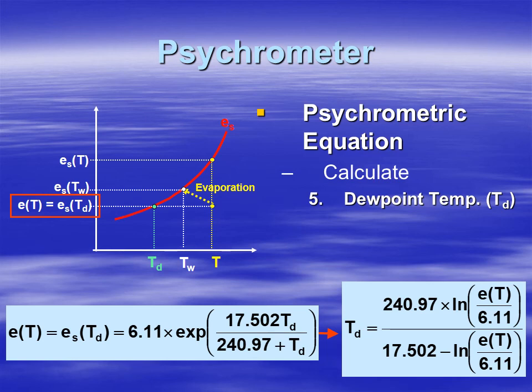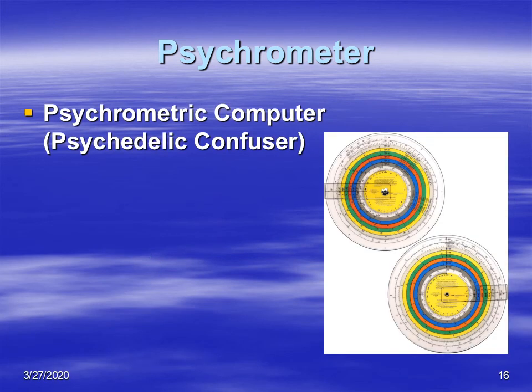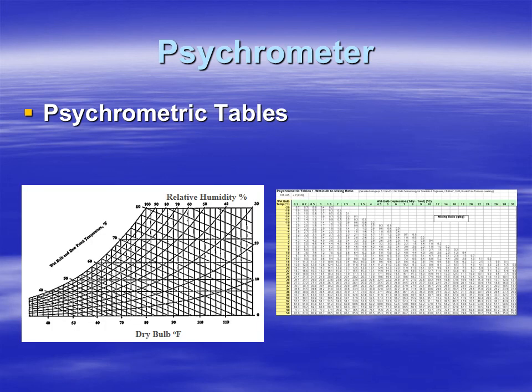If you'd prefer not to do calculations manually, you can use a psychrometric computer — a circular slide rule used for these calculations, sometimes called a 'psychedelic confuser' by Vietnam-era weathermen. These are hard to find today and can be expensive on eBay. Alternatively, you can use psychrometric tables with dry bulb, wet bulb, and pressure values to find relative humidity or dew point. In the next video, we'll discuss errors associated with psychrometric measurements.